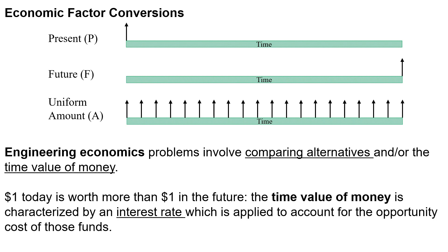The interest rate is equal to the amount of interest paid divided by the total amount owed at the beginning of the time period. These economic conversions involve calculations using an interest rate to modify one time period to another.